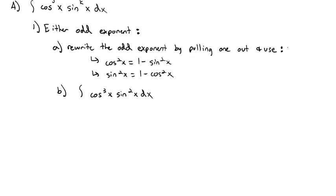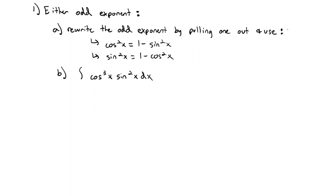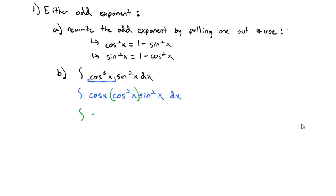If both of them are odd, we can pick on either sine or cosine — it doesn't matter. If only one of them is odd, that's where we're going to focus our attention. Here we see that the cosine is odd, so we're going to pull one of the cosines out, leaving behind two cosine squared of x. We can then use our cosine right-triangle identity: cosine squared becomes 1 minus sine squared of x, times the remaining sine squared of x dx.